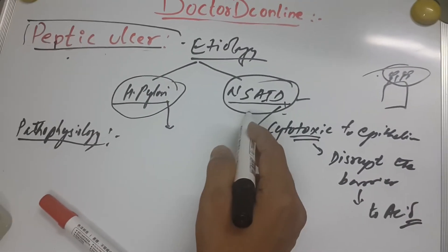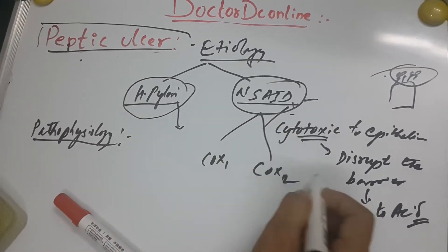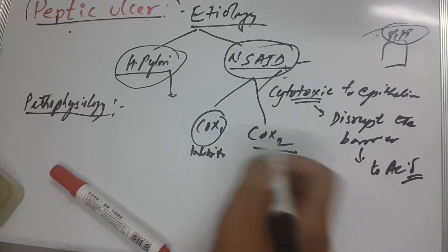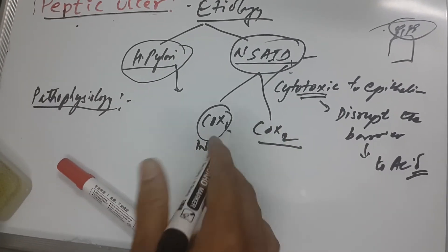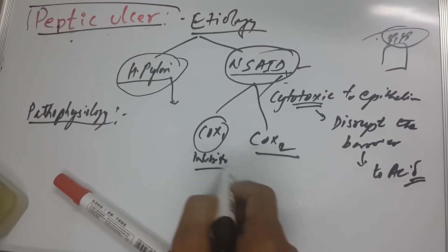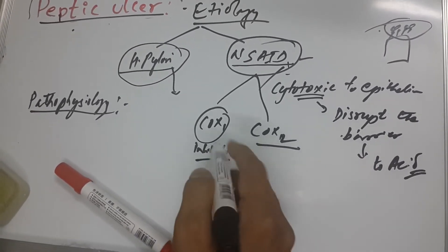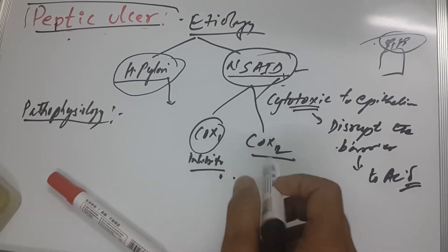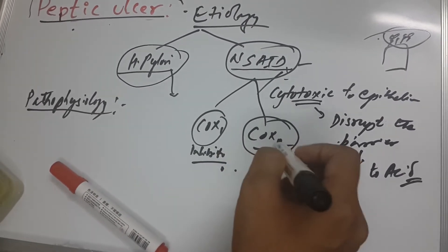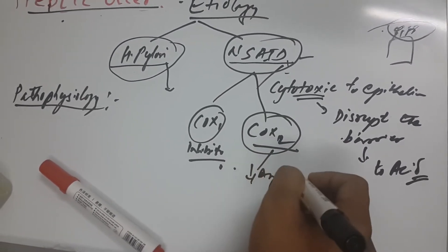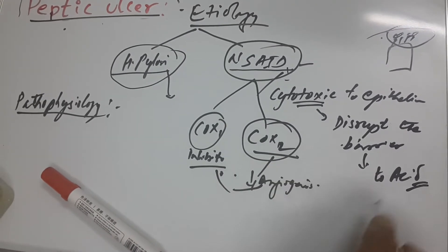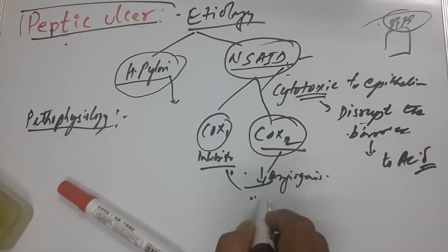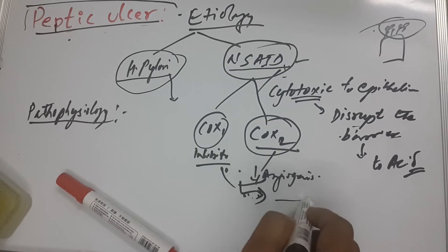Another mechanism is COX-1 and COX-2 inhibition by NSAIDs. COX-1 inhibitors disrupt the barrier and decrease the repair mechanism of the epithelium. COX-2 inhibitors also cause decreased angiogenesis, which similarly disrupts the barrier, ultimately leading to the formation of peptic ulcers.